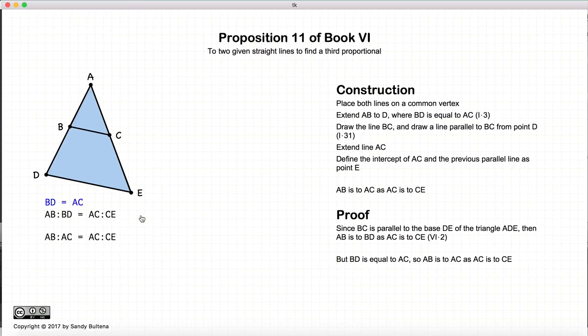And thus we have shown how to construct a line segment CE to be the third proportional to two other line segments AB and AC.